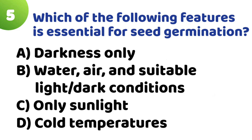Question 5: Which of the following features is essential for seed germination? Option A: Darkness only. Option B: Water, air and suitable light or dark conditions. The correct answer is Option B — Water, air and suitable light or dark conditions.